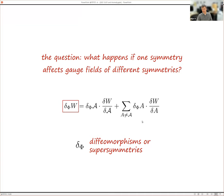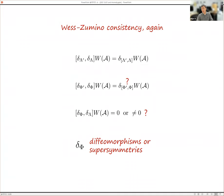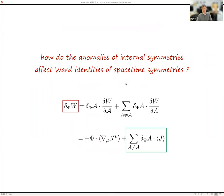When that happens, we cannot ignore this term. There should be some gauge current that appears even though you are making a supersymmetry transformation. What happens to the anomaly itself? What's going on with this current term for the internal symmetry? We need to solve the Wess-Zumino consistency condition including both types of symmetry transformations: λ will denote flavor/gauge transformations, and φ will denote diffeomorphism and supersymmetry.